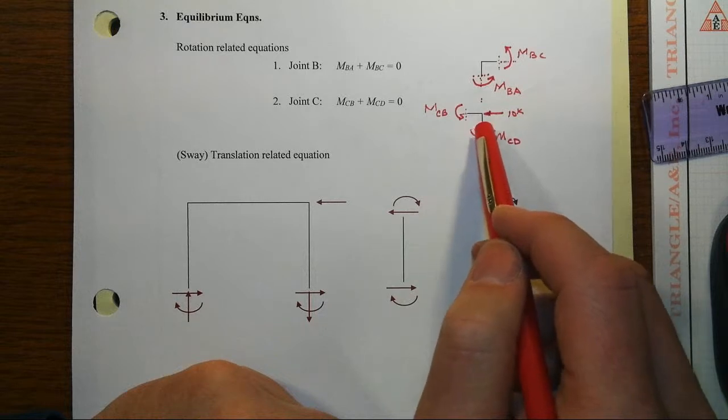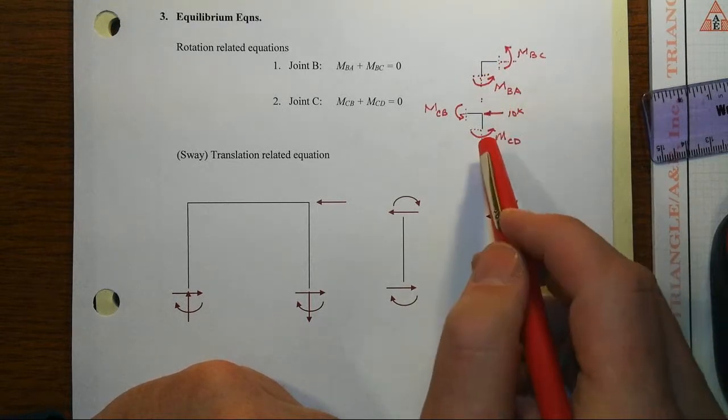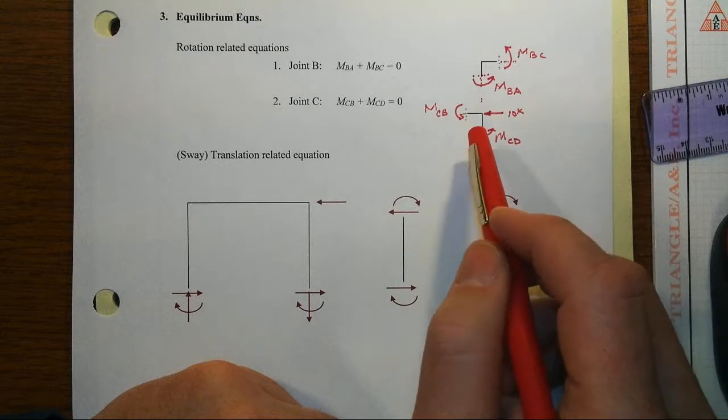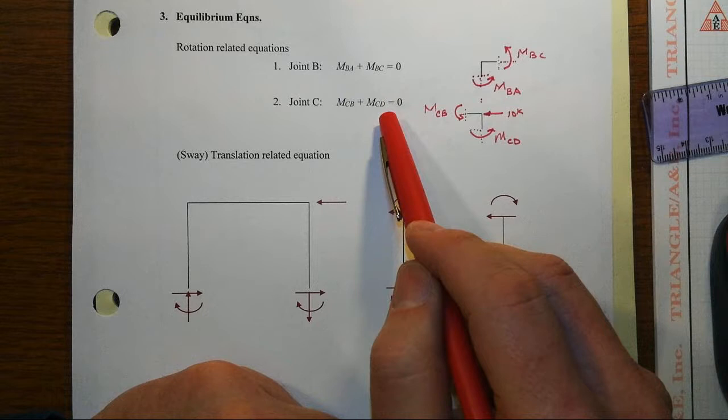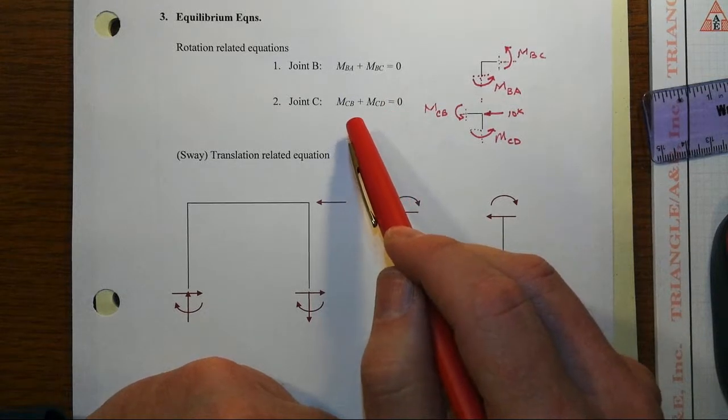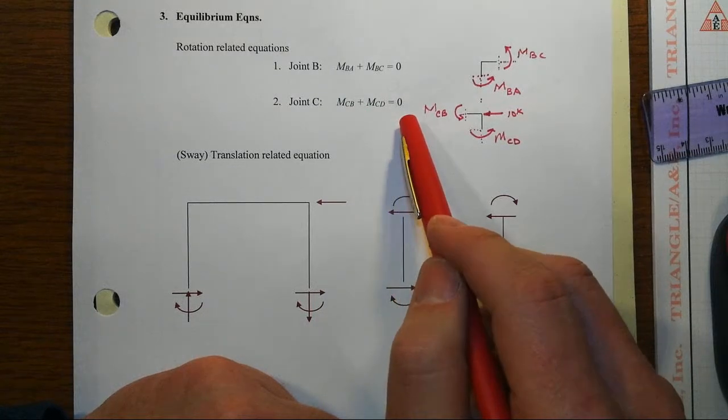I haven't shown any of the axial forces or the shear forces, just kind of dashed them in here to remind me that the key thing out of these joints is that we're writing equations involving the moments. We do that because we have slope deflection equations that give the moments in terms of the member end rotations.